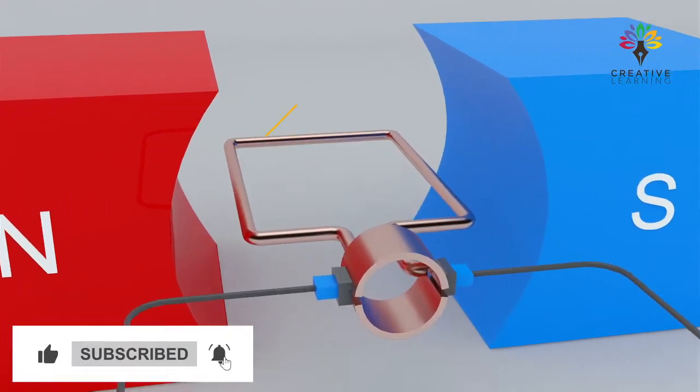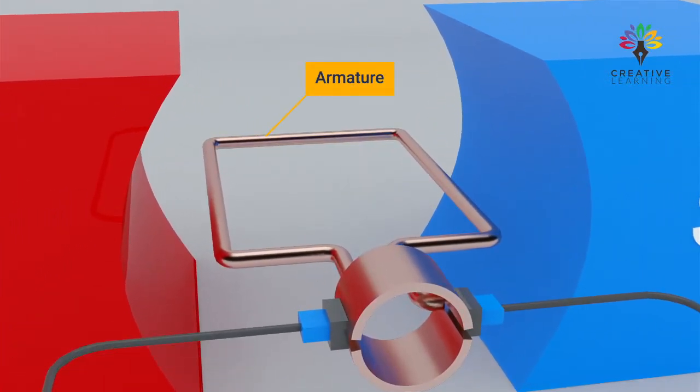At the core of every DC generator is the armature, a coil of wire that rotates within a magnetic field created by stationary magnets or electromagnets.